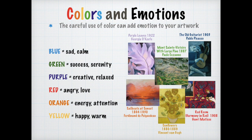Colors and emotions. A lot of times we look at colors and we have a feeling that comes from that color. For instance, blue can represent sad and calm, green can represent success and serenity, purple is creative and relaxed, red depicts anger and love, orange gives us the feeling of energy and attention, and yellow gives us a happy and warm feeling.